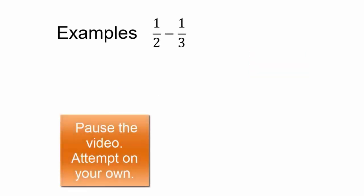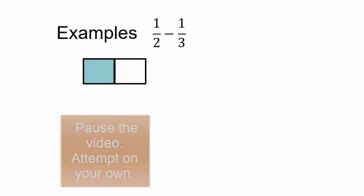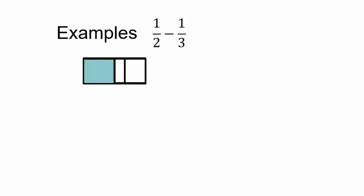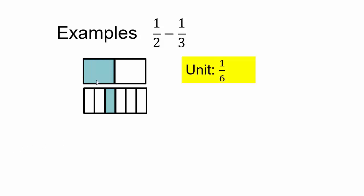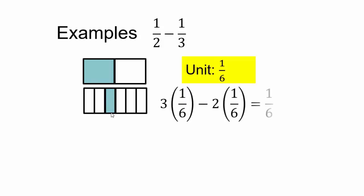Try this on your own — pause the video. So, 1 half is that. 1 third — if I take the whole and break it into thirds, I would color that much and remove it. Whatever is left is our answer, but it's unclear how much that is. So let's take the whole and break it into sixths. 1 half would be 3 sixths, and 1 third would be 2 sixths. If you remove that third, you are left with 1 sixth. So 3 copies of 1 sixth minus 2 copies of 1 sixth leaves you with 1 copy of 1 sixth.